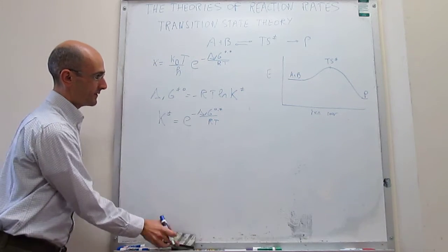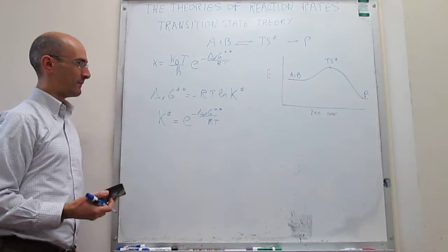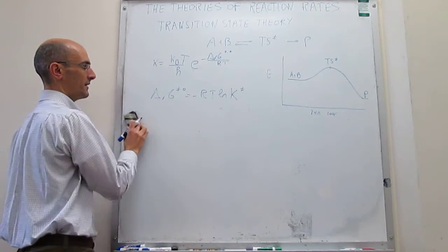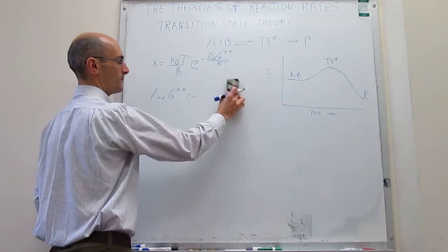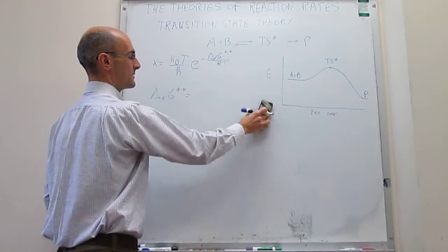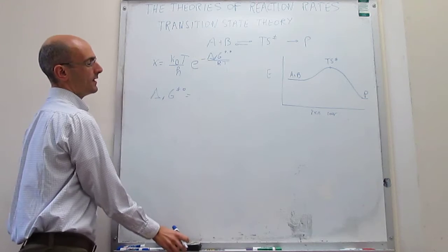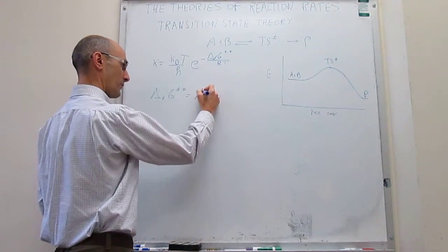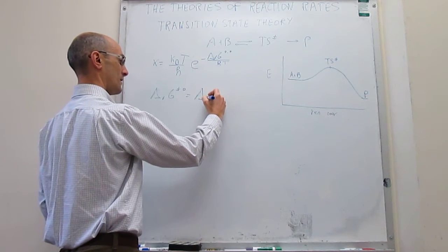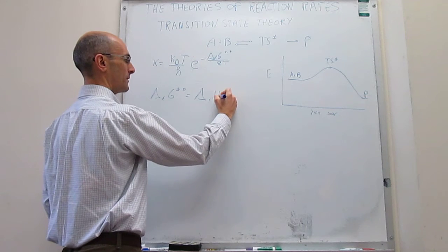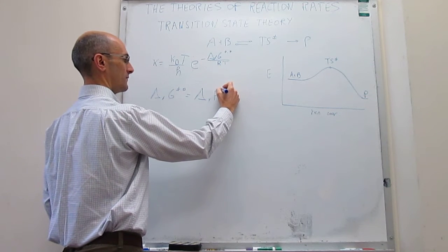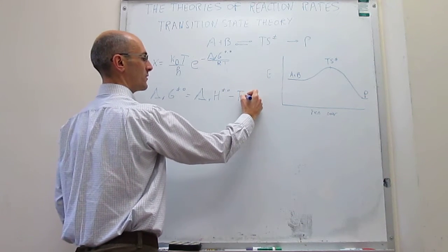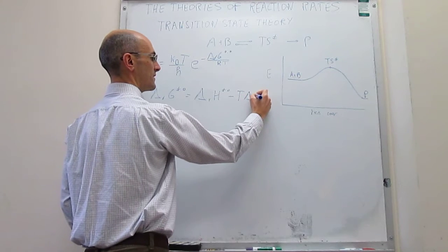That's the first piece of thermodynamics that we include in our transition state theory. The second one is to recognize that the Gibbs energy can be rewritten as a function of the enthalpy of activation, the standard state, and the entropy of activation of the standard state.